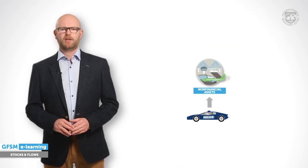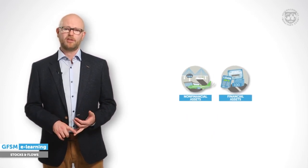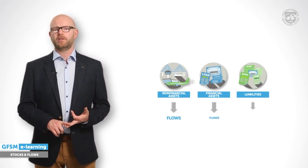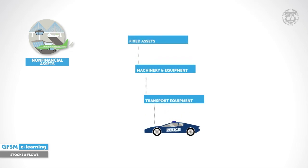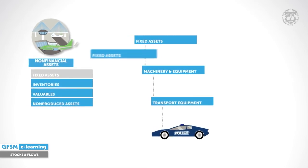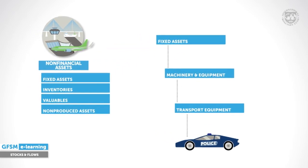Stocks and flows have a clearly defined relationship. In fact, in GFSM this relationship can be expressed by an explicit mathematical equation which illustrates an accounting identity. Now, police cars are just an example for one type of stock — a good example of a group of assets that GFSM calls non-financial assets. In total, there are three categories of stock in GFSM: non-financial assets, financial assets, and liabilities. Police cars are part of the asset category transport equipment, which is a subcategory of machinery and equipment, which is a subcategory of fixed assets. GFSM provides four categories of non-financial assets with a classification tree down to detailed subcategories.